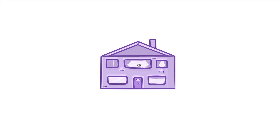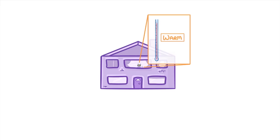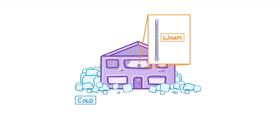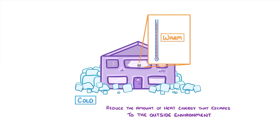Let's start by considering a typical house. Most people like their home to be nice and warm, even if it's freezing cold outside. In order to achieve this, we need to reduce the amount of heat energy that escapes to the outside environment, and there are a whole range of ways that buildings are adapted for this.